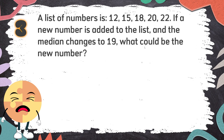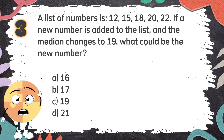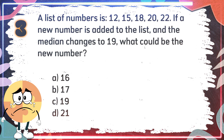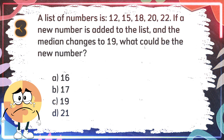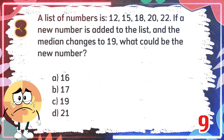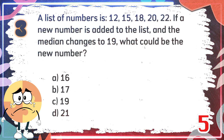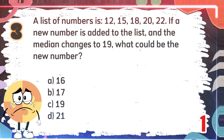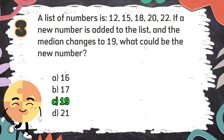Number 3: A list of numbers is 12, 15, 18, 20, 22. If a new number is added to the list and the median changes to 19, what could be the new number? The choices are A. 16, B. 17, C. 19, D. 21. The correct answer is C. 19.